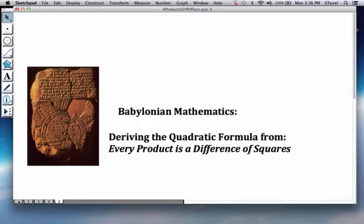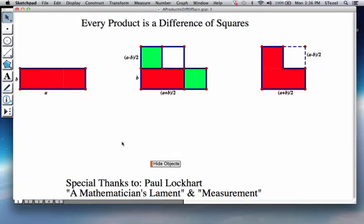I'm just going to quickly remind you what was discussed in the earlier video, which was based on Paul Lockhart's new book called The Measurement. Given any product A times B, you can actually express this product as a difference of squares as you can see here.